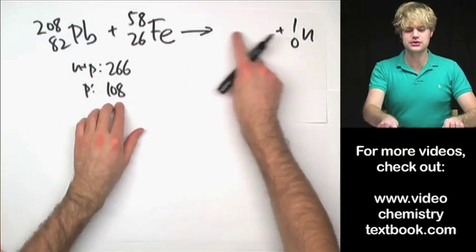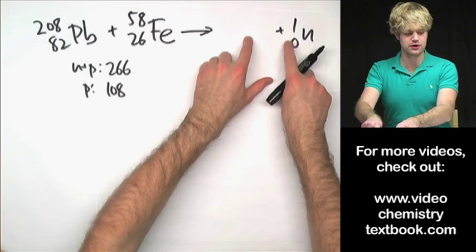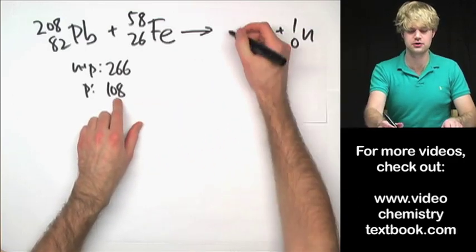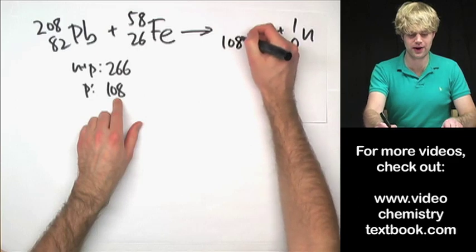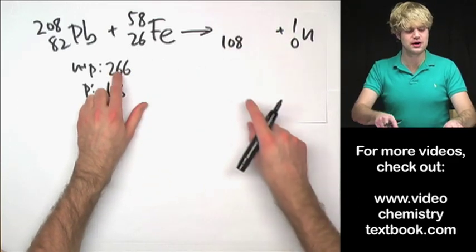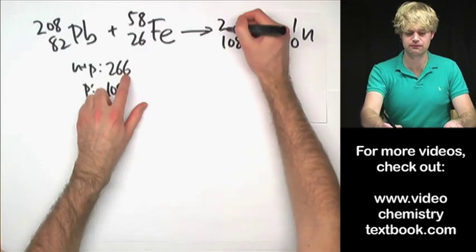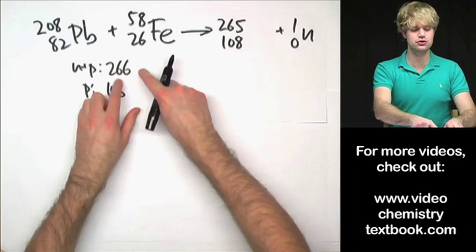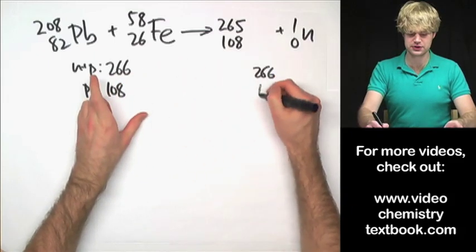So that means that whatever's going to be on this side of the equation has to have 108 protons because I don't get any protons out of the neutron. And my mass number is going to be 265 because then I add 1 from the neutron and then I have 266 on both sides of the equation.